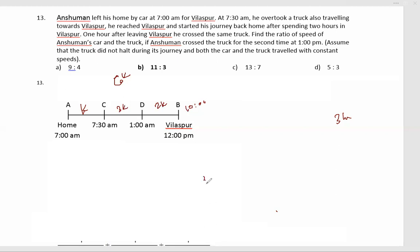So 3k distance is traveled by the truck in how many hours? 7:30 to 1 pm is 5.5 hours. That means total journey for the truck is 11 hours. So time taken is 3 to 11, so speed ratio must be 11 is to 3. Option B.